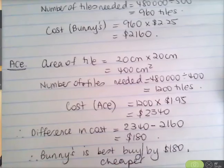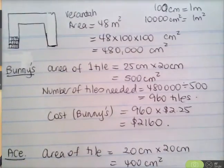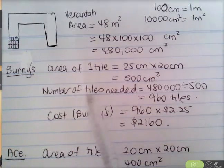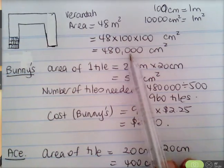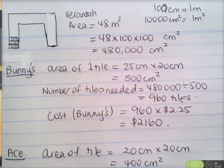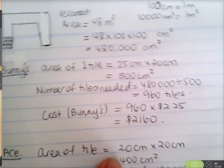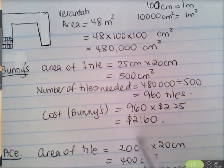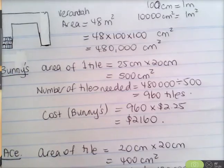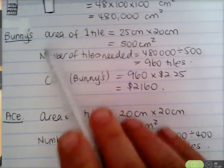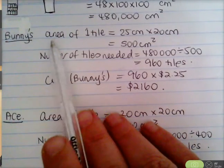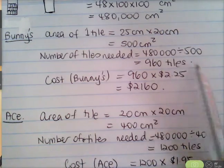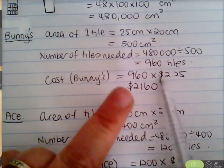This question might be worth 5 or 6 marks, but every step earns a mark. Working out the area of a tile is one mark; dividing to find the number of tiles is another mark. Even if an earlier answer is incorrect, you still get marks for working, which is why you need to show each step clearly.